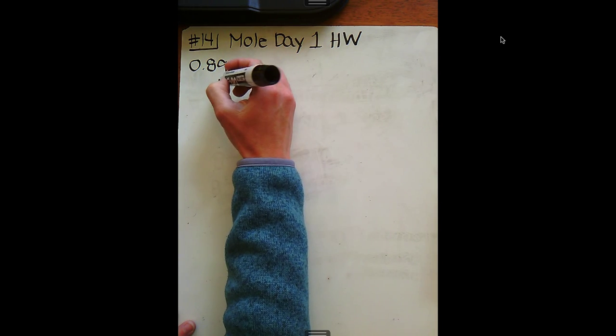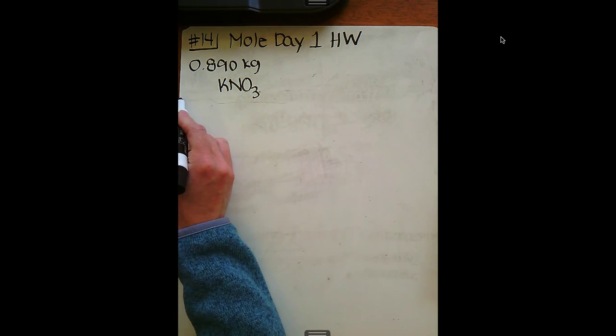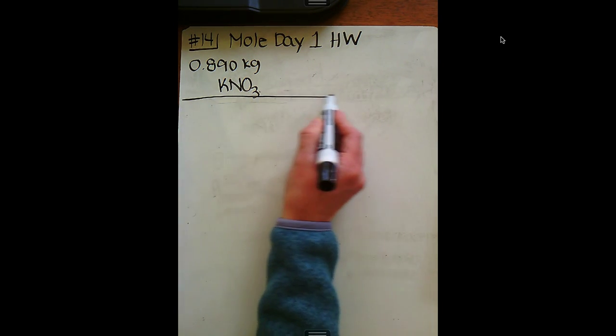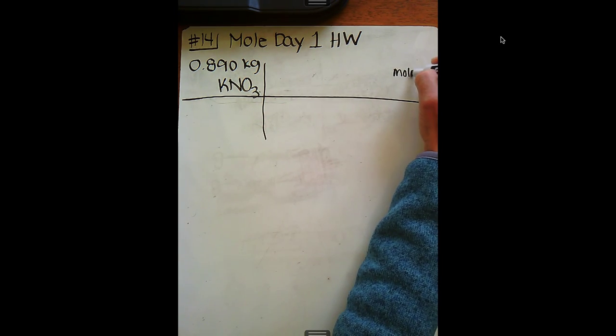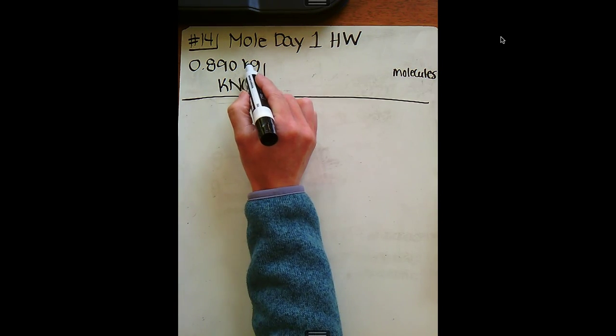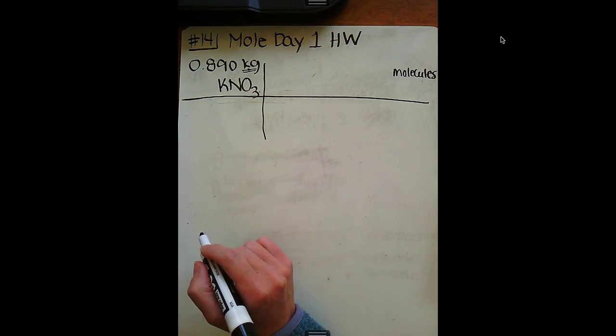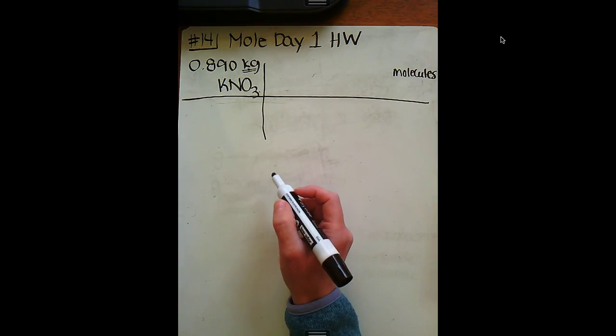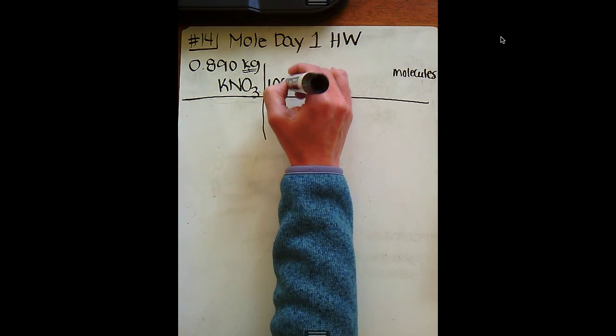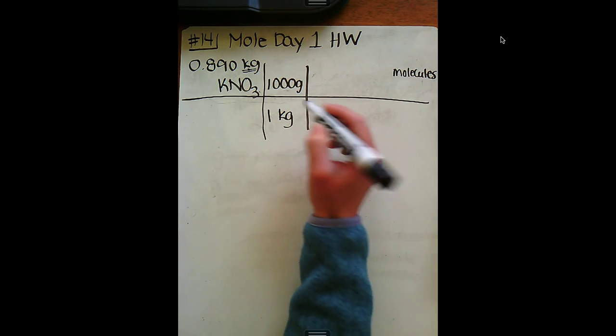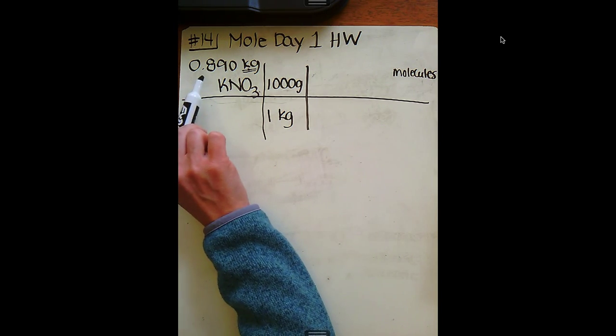It is asking us how many molecules are present, so this is extremely similar to the last question. We're trying to get over here to molecules. The deal is, if you look on the front end here, it's in kilograms. You could do this one of two ways. You could stop right here and say I know that one kilogram represents a thousand grams, and then kilograms cancels out.